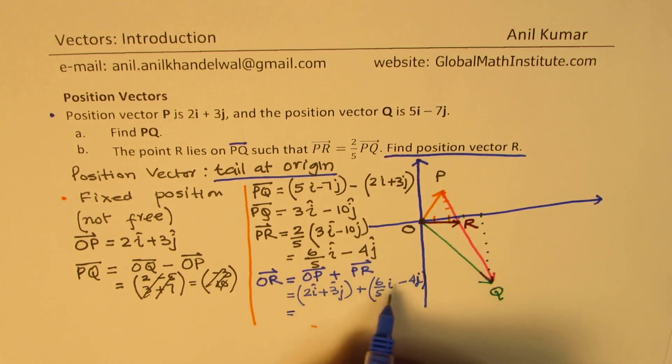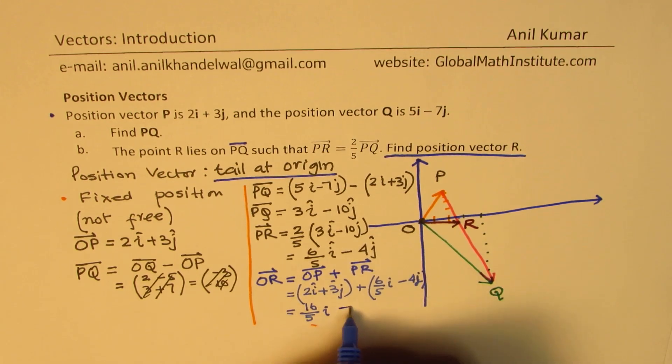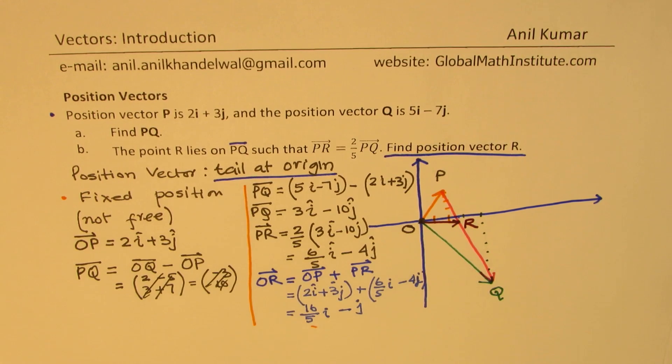So O to P is given to us as 2i plus 3j. That is OP plus PR, which we just found, which is 6 over 5i minus 4j. So when you add this, you get 5 times 2 is 10, 10 plus 6 is 16, 16 over 5i. And we get minus 4 from 3 is minus 1j. So it is almost correct, a way to represent it. So that becomes the vector OR.